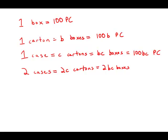And if we have two cases, that would be two BC boxes, so that would be 200 BC paper clips. And that is answer choice C.